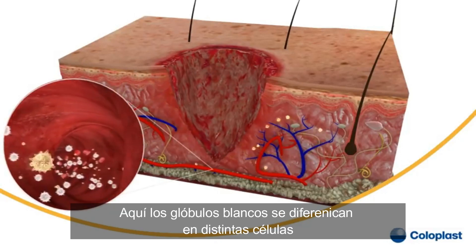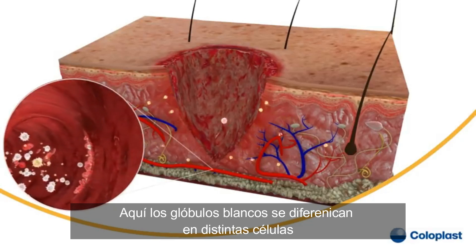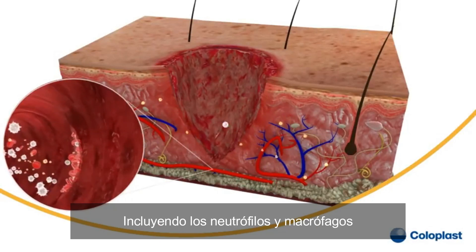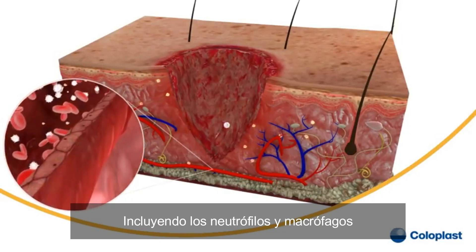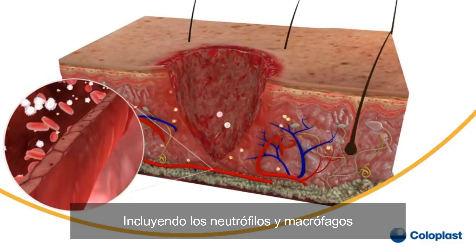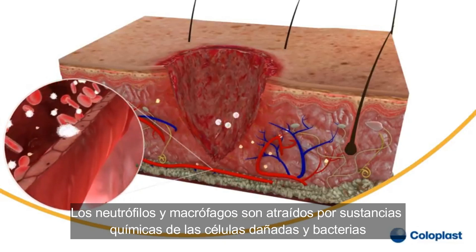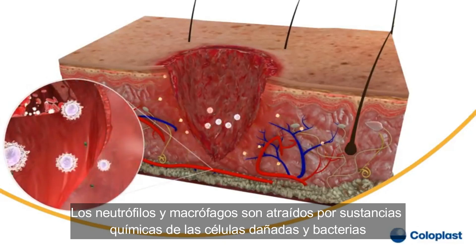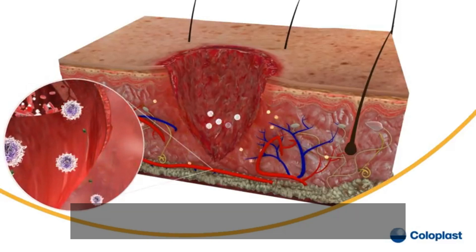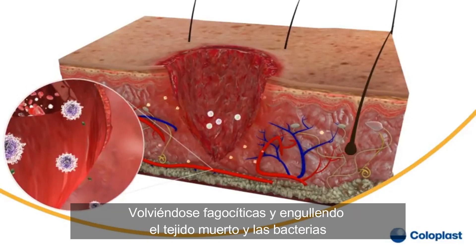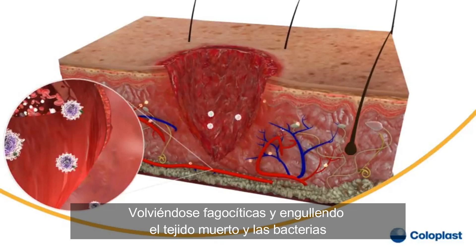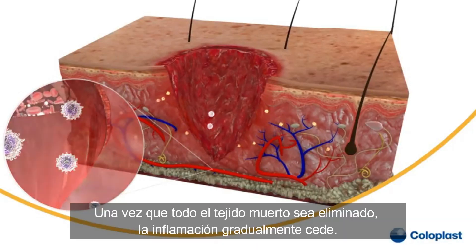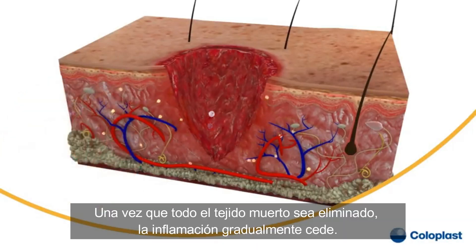Here, the white blood cells differentiate into different cells, including neutrophils and macrophages. Neutrophils and macrophages are attracted to the damaged cells and bacteria by chemical substances. They become phagocytic and engulf dead tissue and bacteria. Once all the dead tissue is eliminated, the inflammation gradually subsides.